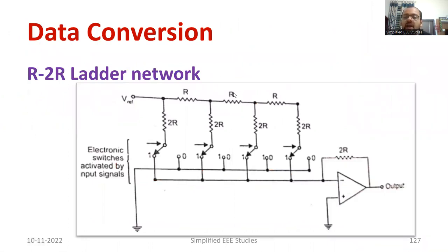The main setback of weighted resistor DAC is identification of that particular resistor. I need to find out a resistor with value R, then again I need to find out R by 2, then R by 4.